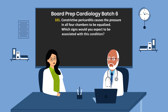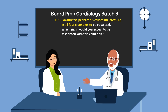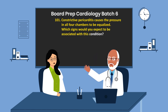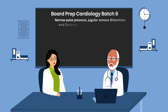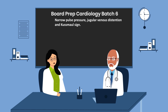Question 101. Constrictive pericarditis causes the pressure in all four chambers to be equalized. Which signs would you expect to be associated with this condition? Narrow pulse pressure, jugular venous distension, and Kussmaul's sign.